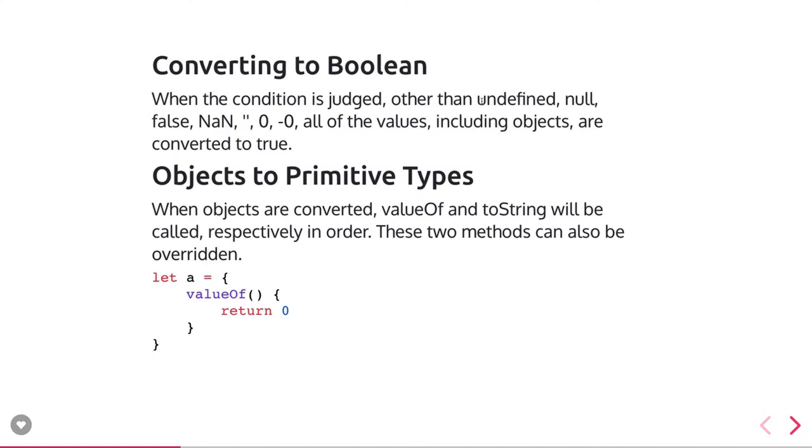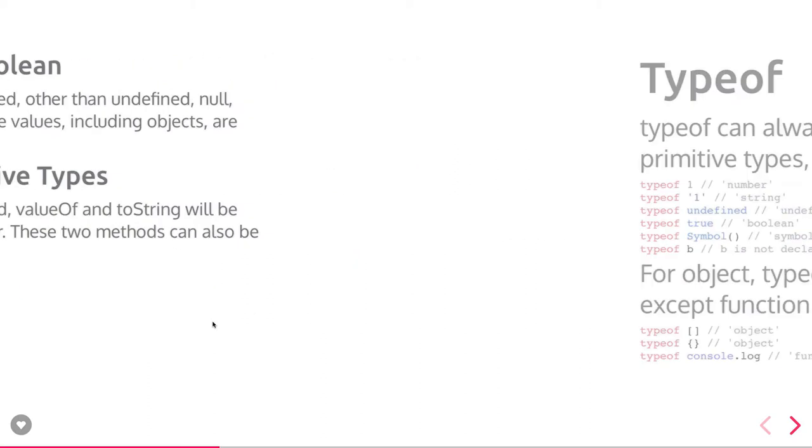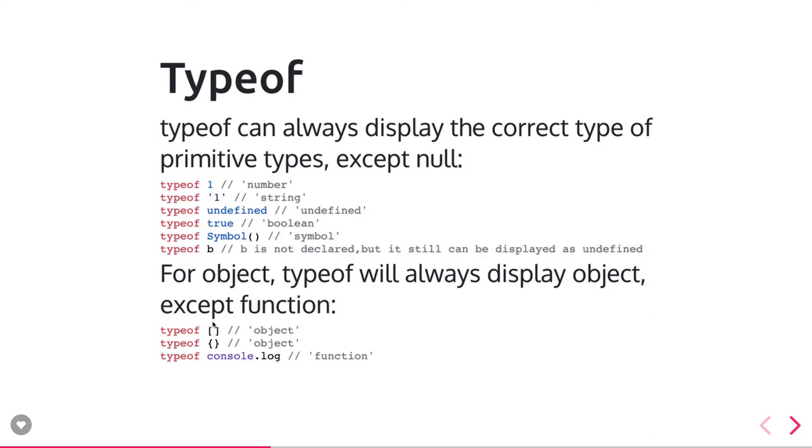Objects to primitive - this is important. How can we convert object to primitive value? You can see this function object 'a' - what is it returning? It's returning value 0. We are using valueOf to convert an object to a literal string or literal number. typeof can always display the correct value except null.